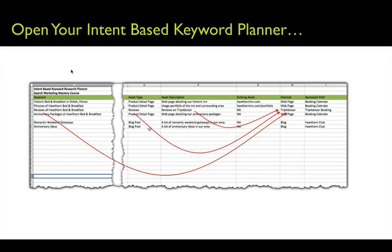In another example, we look at our intent-based keyword planner — somebody that's looking for reviews of Hawthorne bed and breakfast. The asset type is reviews. And these reviews are going to make the most sense to target via TripAdvisor as a channel, because we're a bed and breakfast. So as a bed and breakfast operating in the travel space, we had better be looking at TripAdvisor as a channel.